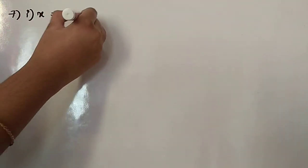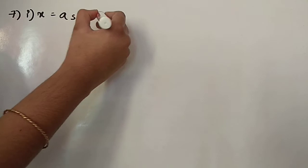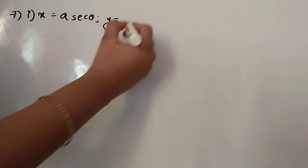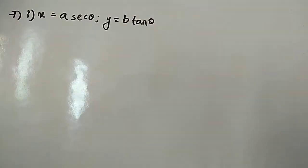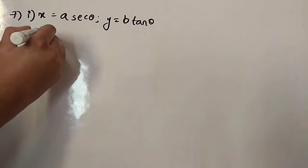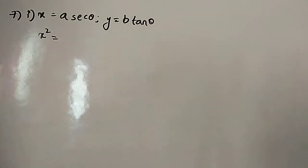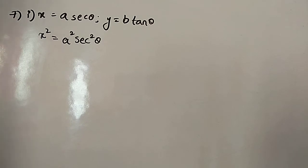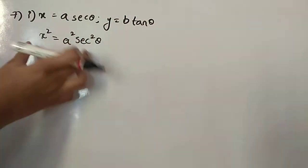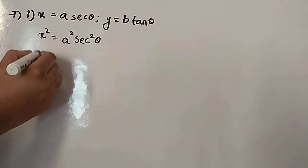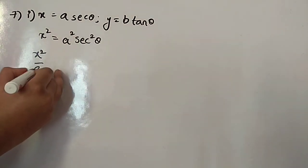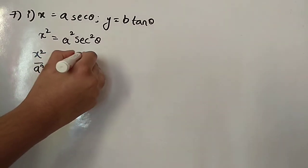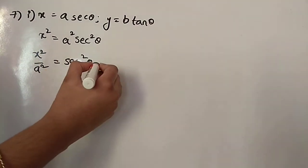The first question is: x is equal to a·secant θ and y is equal to b·tan θ. We have to eliminate theta. So first, we will square both sides. x² is equal to a²·sec²θ. Now, bringing a² to the LHS, it becomes x²/a² = sec²θ. This is the first equation.